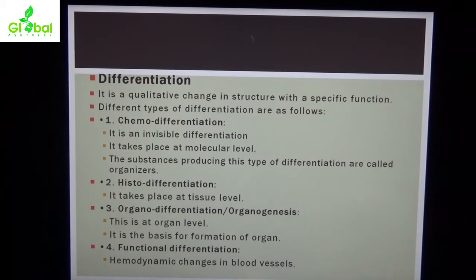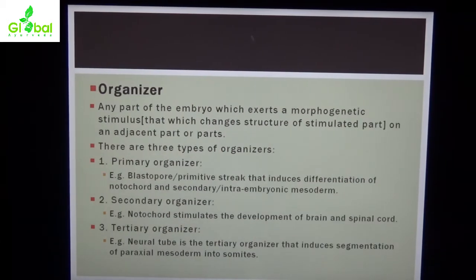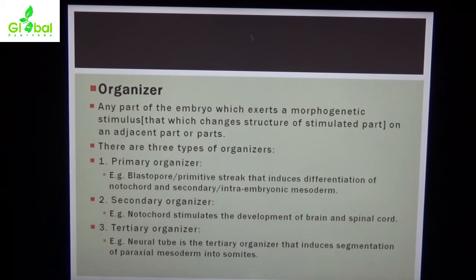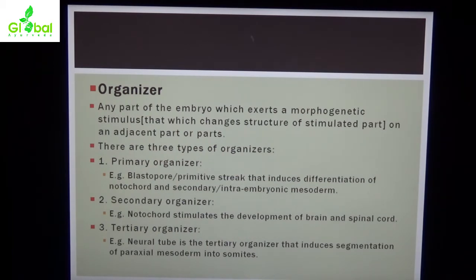Fourth type is functional differentiation, where differentiation takes place according to function — for example, hemodynamic changes in blood vessels. Organizers, as seen in chemo-differentiation, are any part of the embryo which exerts a morphogenetic stimulus on an adjacent part, changing its structure.